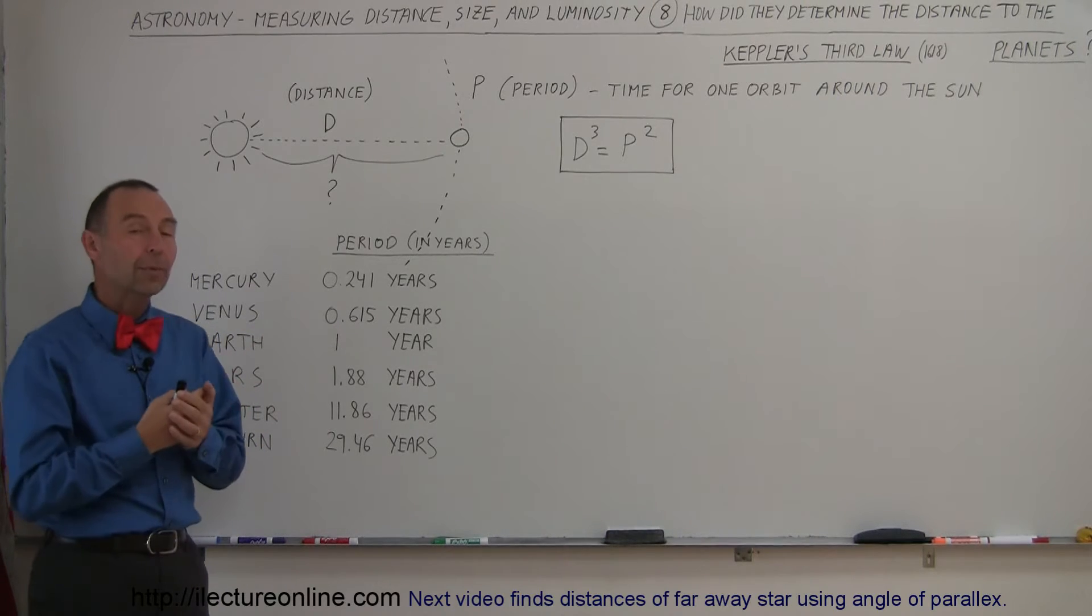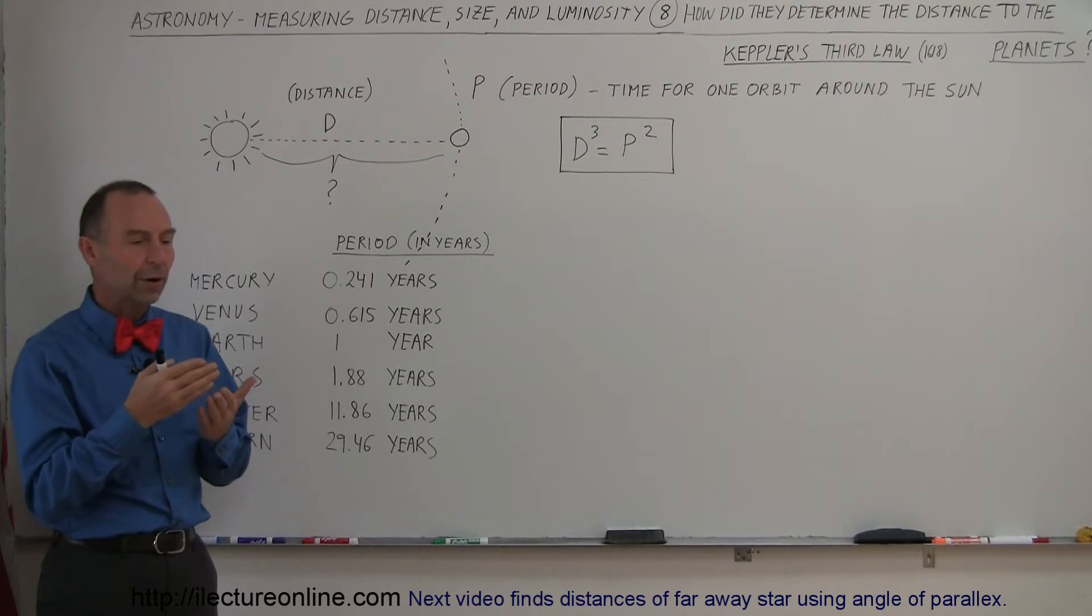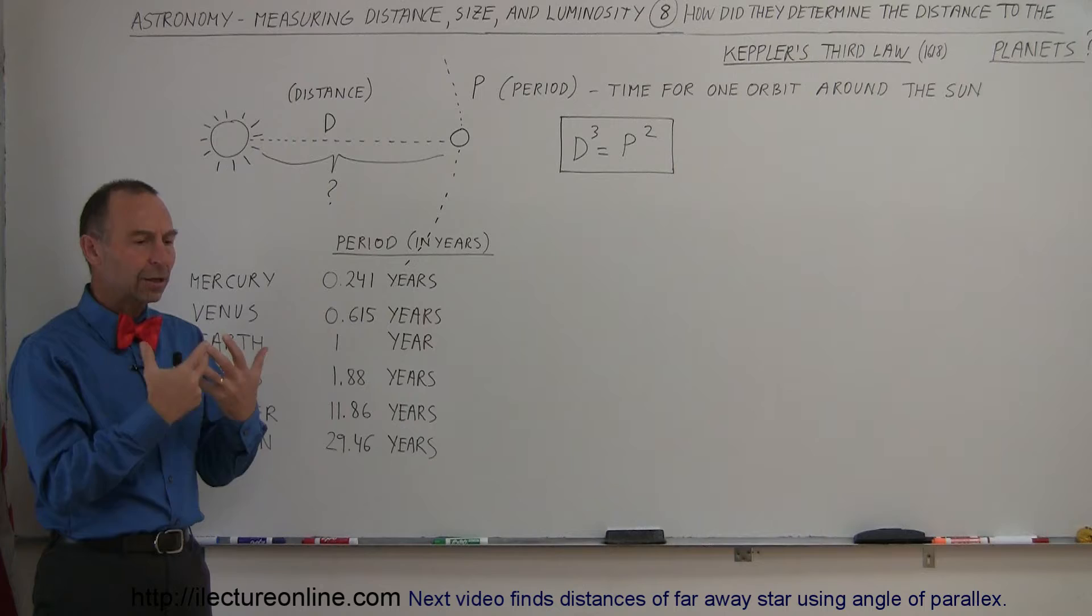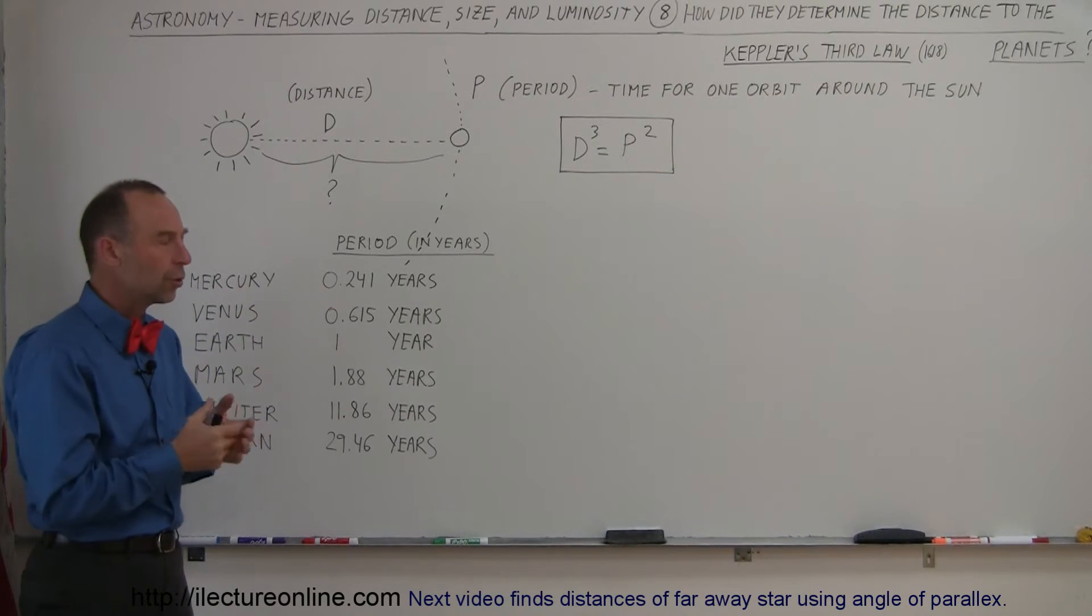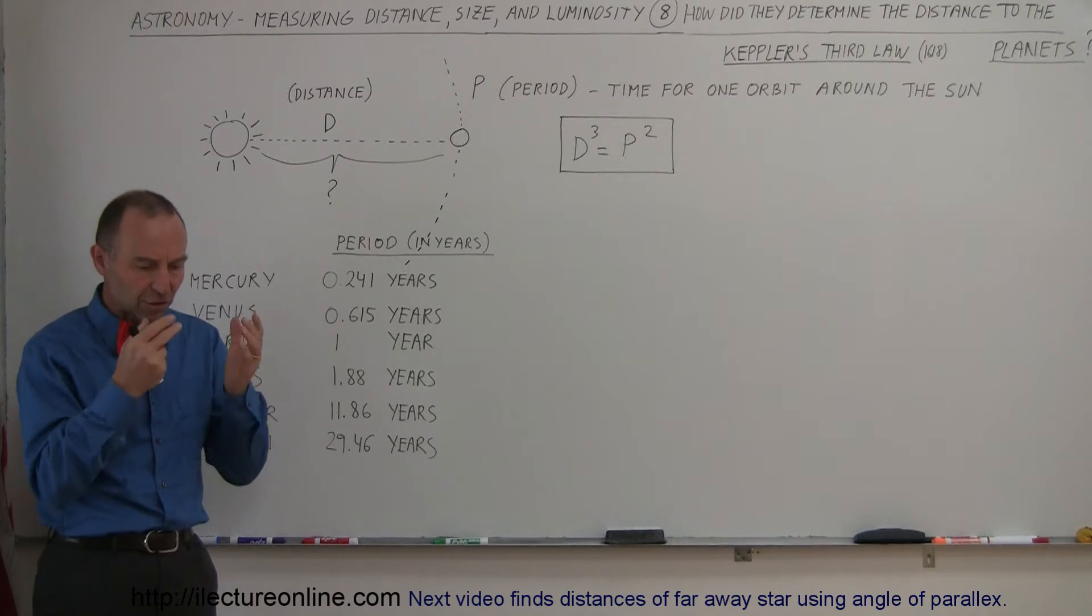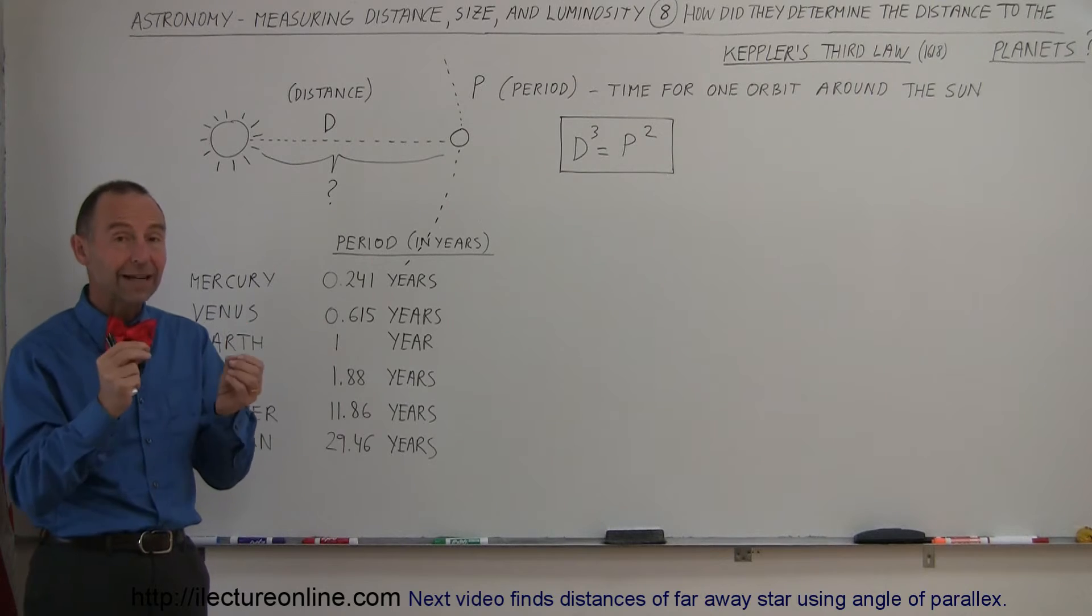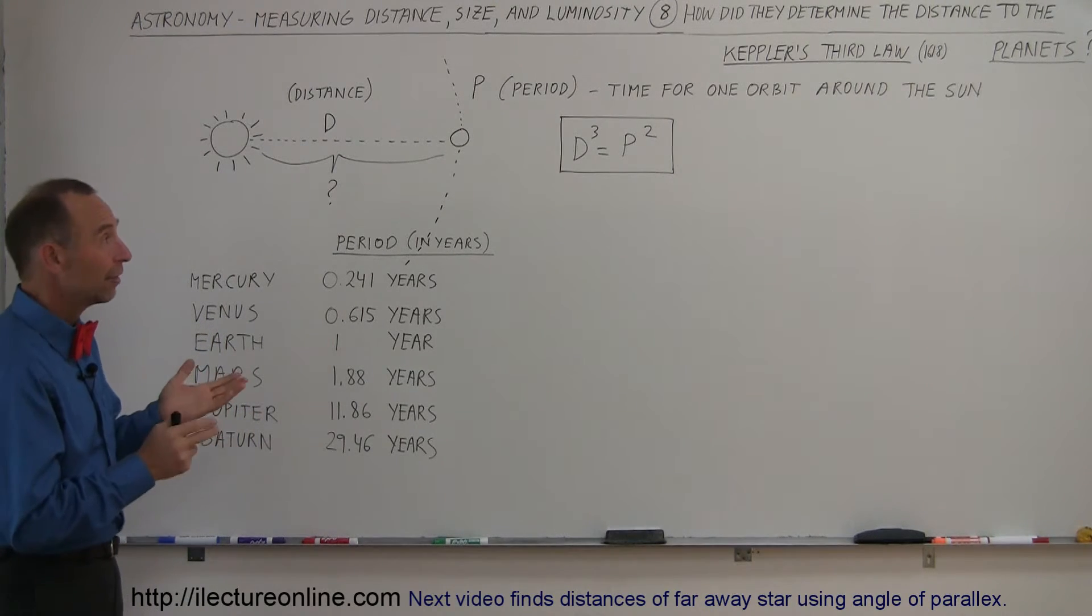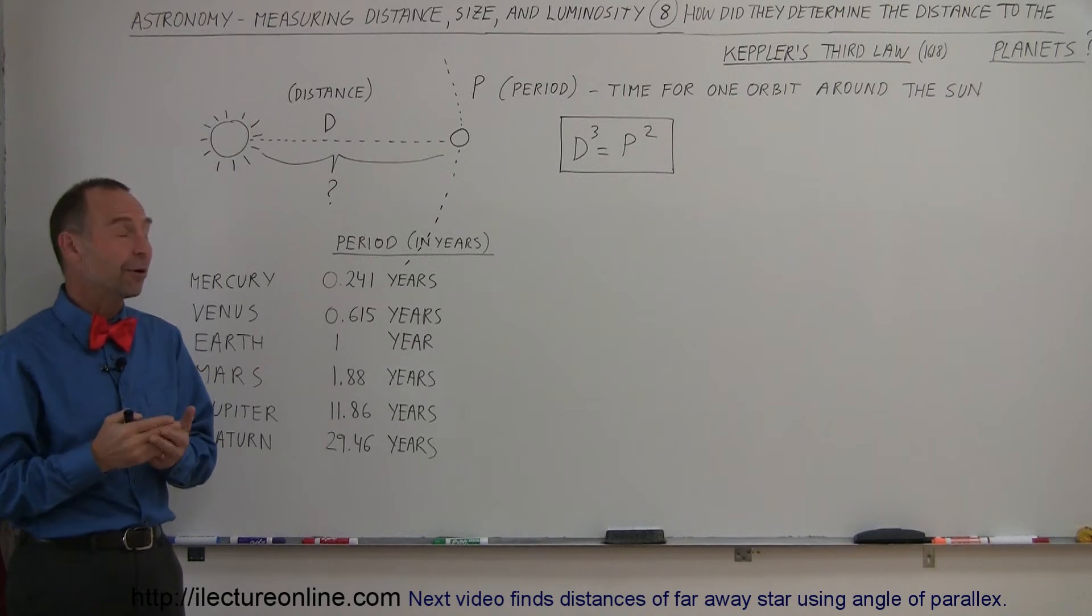He ended up going to Austria where Kepler became one of his students, and when Tycho Brahe died, Kepler inherited these notes. Kepler spent years and years studying these numbers, studying these notes, and finally, he began to understand what they all were saying to him. And so that's where the three laws of Kepler came from.